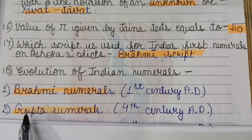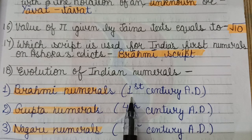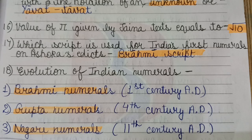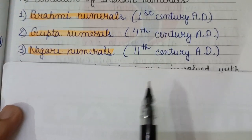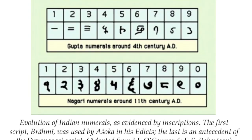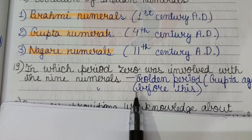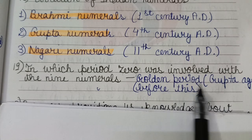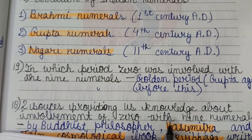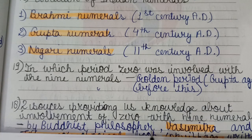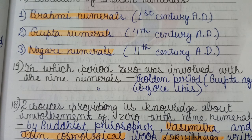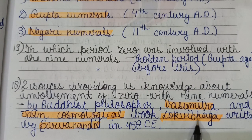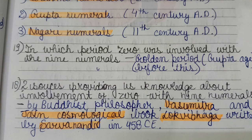The evolution of Indian numerals progressed from Brahmi numerals in the 1st century AD, to Gupta numerals in the 4th century AD, and then Nagari numerals in the 11th century AD. Zero was incorporated with the 9 numerals before the Gupta (golden) period. Two sources providing knowledge about this are the Buddhist philosopher Vasumitra, and the Jain cosmological book Lok Vibhag, written by Sarvanandi in 458 CE.